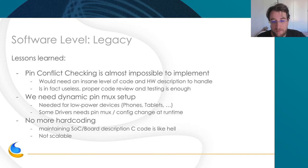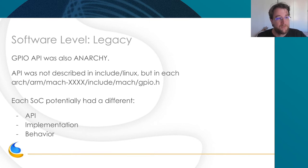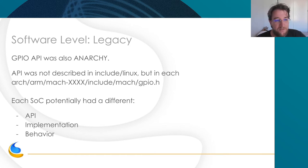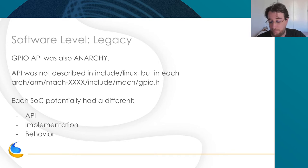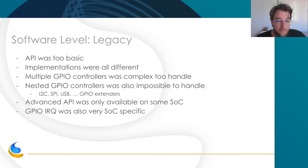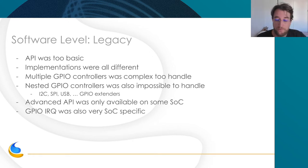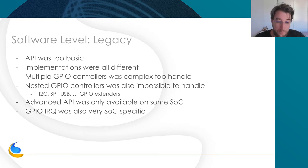The GPIO API was also in bad shape — it was older than pin control and even worse. You didn't have a single gpio.h; each board or SoC support had a different GPIO header, meaning different APIs, different implementations, different types, and different behaviors. The API was too basic, every implementation was different, you couldn't handle multiple GPIO controllers easily, and it was impossible to handle unlisted controllers like I2C GPIO expanders or SPI expanders. Only some SoCs had advanced features with runtime support, and GPIO IRQ was too simple and too SoC-specific.